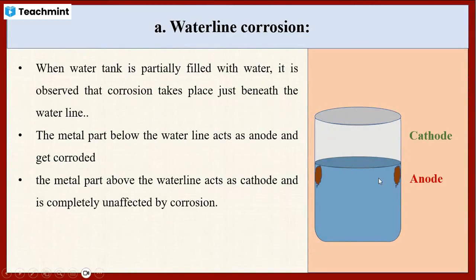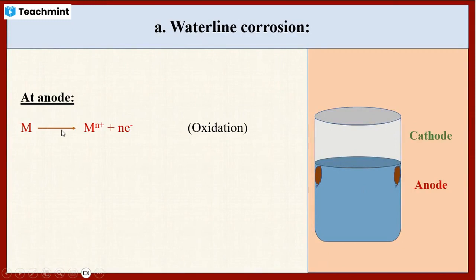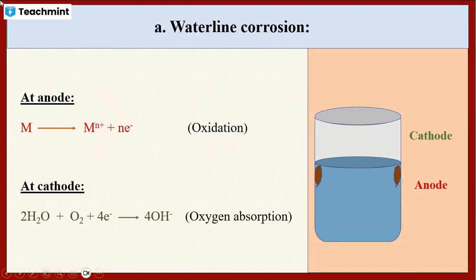The same reactions take place here as in other differential aeration corrosion. At the anode, oxidation takes place — the metal is converted into its metallic ion form with the liberation of electrons. At the cathode, oxygen absorption takes place: the water molecules present in the corrosive media absorb oxygen along with these electrons, and OH⁻ ions are formed. This is waterline corrosion.